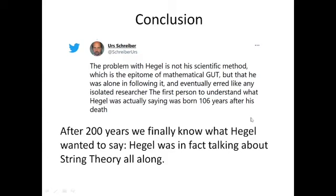So in conclusion. After 200 years we finally know what Hegel wanted to say. Hegel was in fact talking about string theory all along. For example here we can see a tweet by Urs Schreiber where he explained that nobody understood what Hegel was actually talking about until many years later. The first person to understand what Hegel was actually saying was born 106 years after his death. So he's referring to Lawvere here. So Lawvere, the category theorist who formalized Hegel's dialectic was the first person to understand what Hegel actually was talking about. And what he was talking about was string theory.